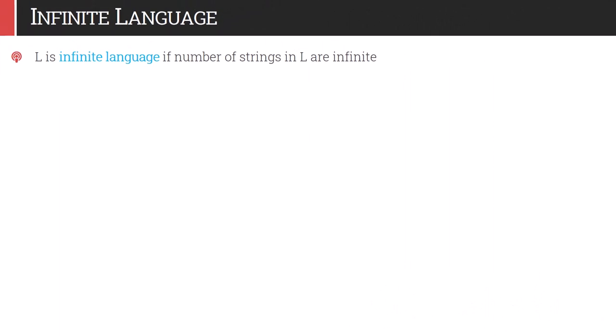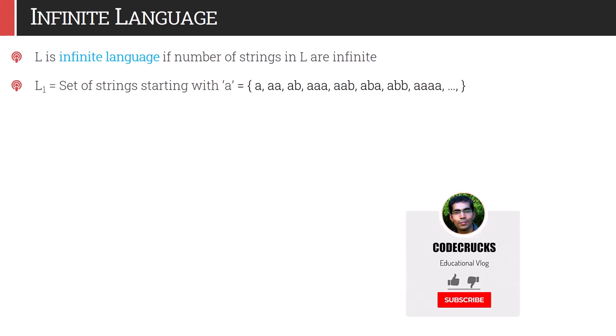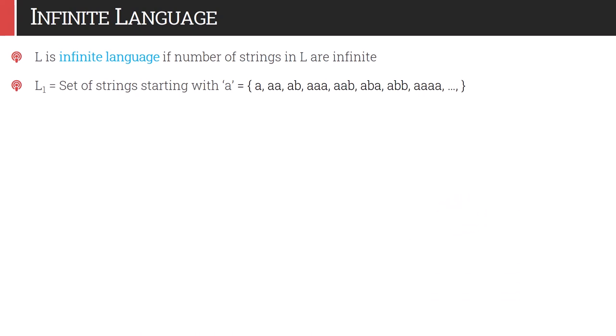A language L is called an infinite language if the number of strings in it are infinite. Consider language L1 = set of strings starting with 'a'. The condition is that the initial symbol must be 'a' — after that, any combination of 'a' and 'b' can follow. So we have strings: a, aa, ab, then strings of length three starting with a (aaa, aab, aba, abb), then length four, five, six, seven, and it keeps going. We cannot count them — there are infinitely many such strings, so this language is called an infinite language.